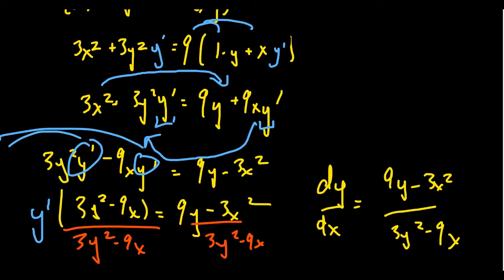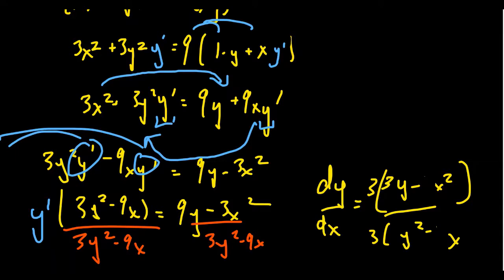We can simplify by factoring out 3 from numerator and denominator. The numerator becomes 3 times (3y minus x squared), and the denominator becomes 3 times (y squared minus 3x). The 3s cancel, giving us the simplified derivative: dy/dx equals (3y minus x squared) over (y squared minus 3x). This is the derivative found implicitly — it's a function of both x and y.